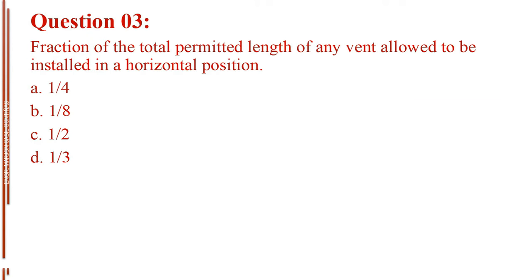Question number 3. Fraction of the total permitted length of any vent allowed to be installed in a horizontal position. Letter A, 1 quarter. Letter B, 1 eighth. Letter C, 1 half. Letter D, 1 third.